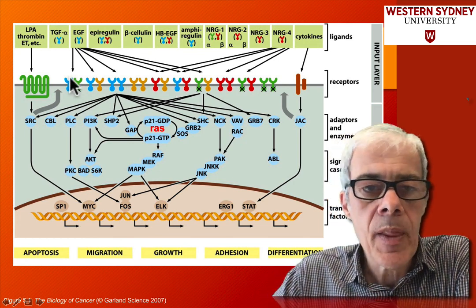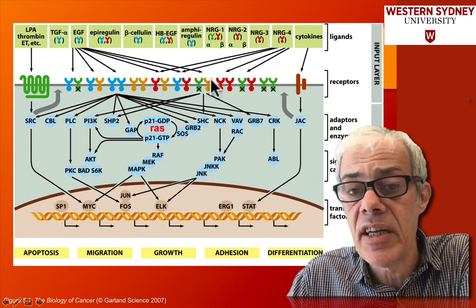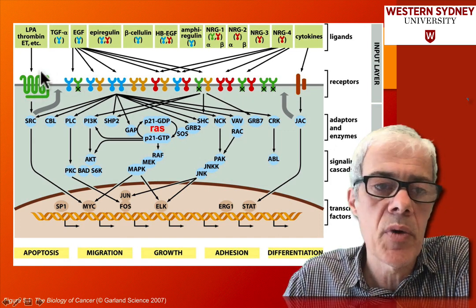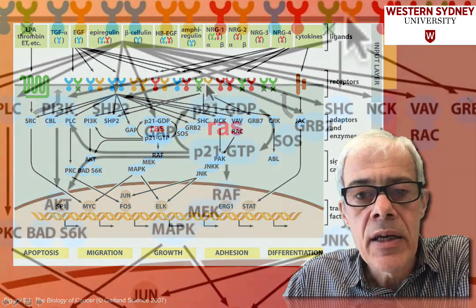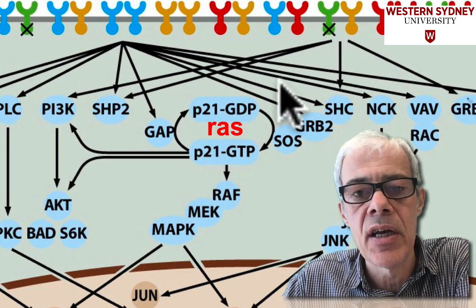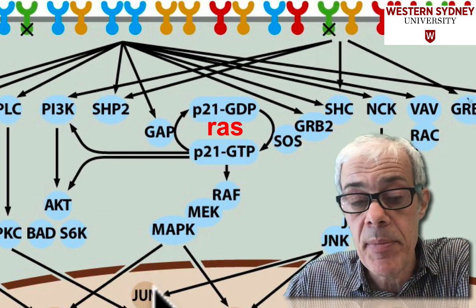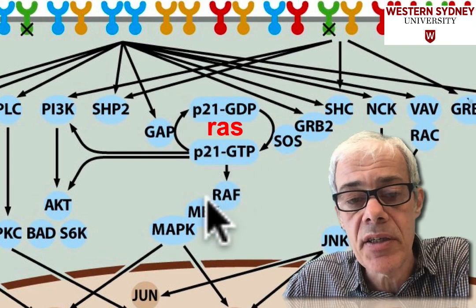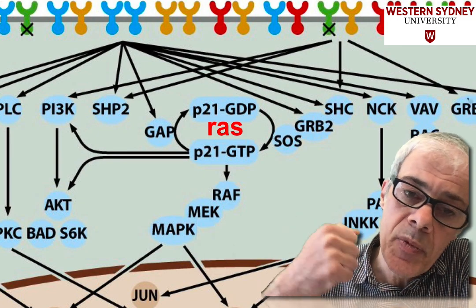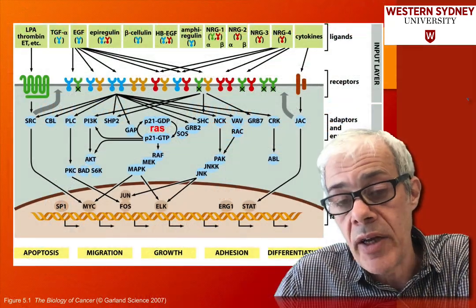We have here a range of receptors, and these tyrosine kinase receptors are the ones we're going to be looking at. There are also other types of receptors, which I won't discuss now. Somewhere in these pathways are oncoproteins such as RAS proteins. Some of these receptors are oncoproteins, and some of these transcription factors are maybe oncoproteins. These are the key proteins that, when mutated, push the pathway they're involved in to an extraordinary limit.